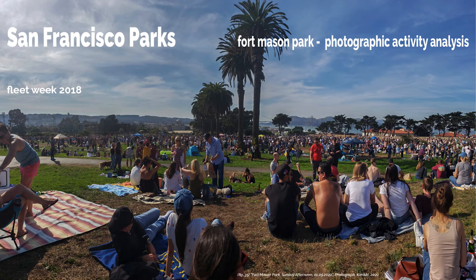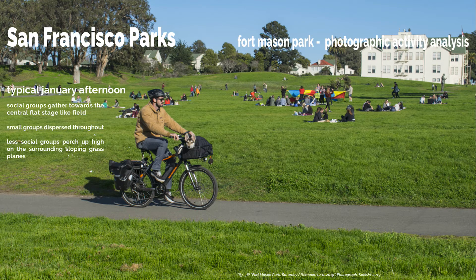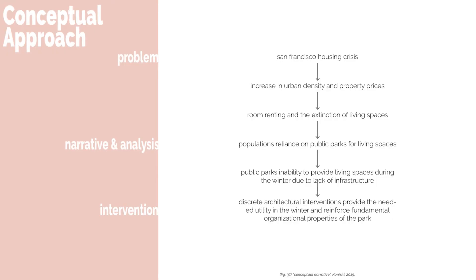The inspiration for winter interventions within parks came to me when I was hanging out in Fort Mason Park on a typical Sunday afternoon in January. As I hung out until dark, I watched everyone leave the park as the sun set, and realized that the utility of these parks is no longer there when the sun is gone. I began by looking at the San Francisco housing crisis, which led me to look into urban density and property prices, then room renting and the extinction of living spaces. Discrete architectural interventions can provide the needed utility in the winter and reinforce fundamental organizational properties of the park.